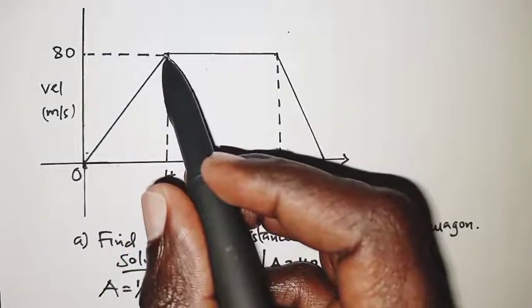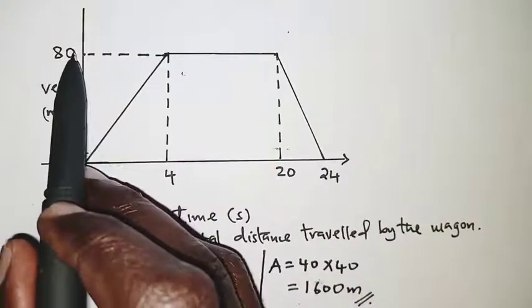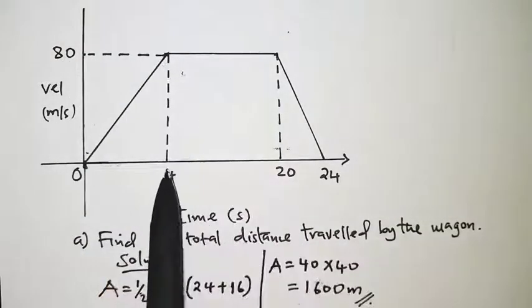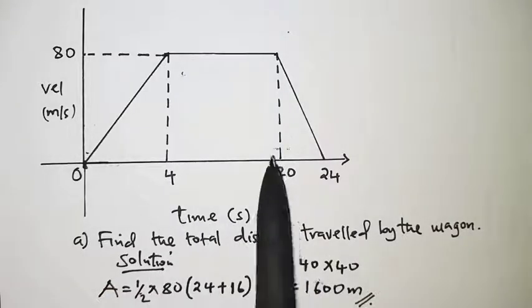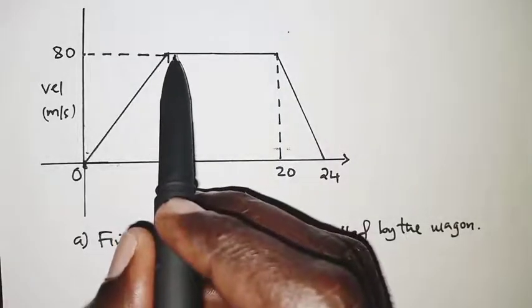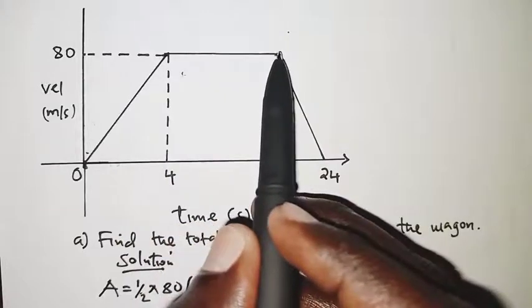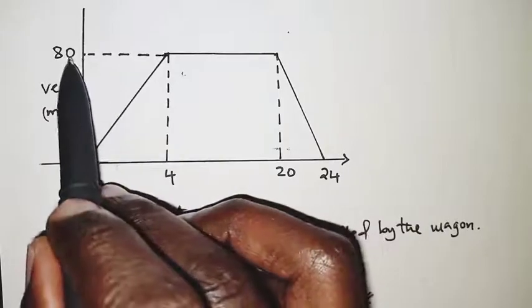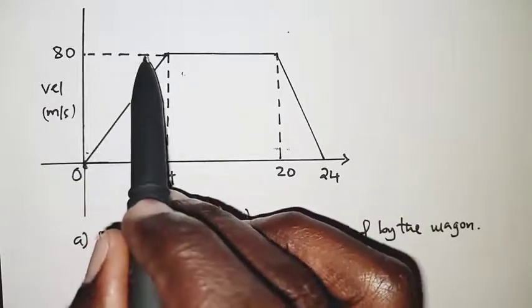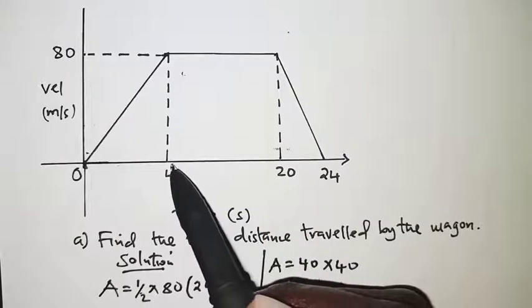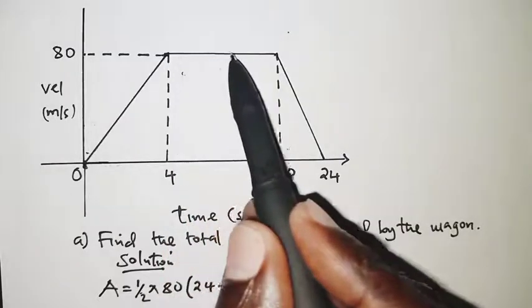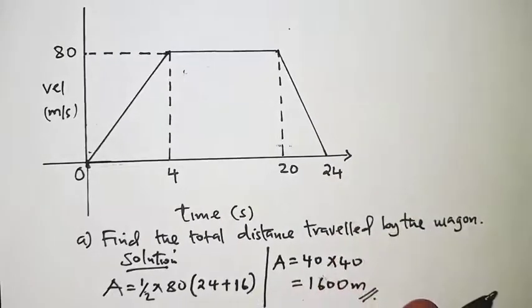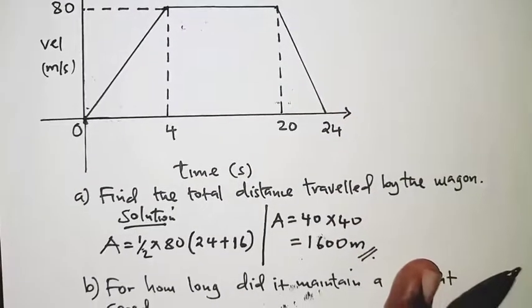On the graph, beginning from 0, the velocity is increasing steadily. As the velocity is increasing steadily, it comes to a point at 80 meters per second. As time continues from 4 seconds up to 20 seconds, the time it took to maintain a constant speed, you realize that it is flat. That simply means the velocity was constant, it was not changing. It remained at 80 meters per second from time 4 seconds up to time 20 seconds.